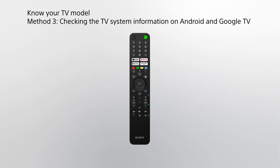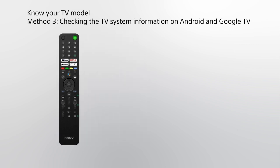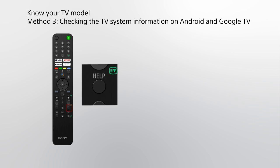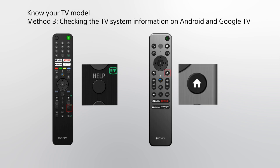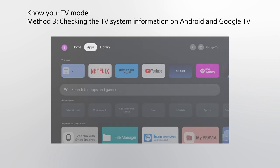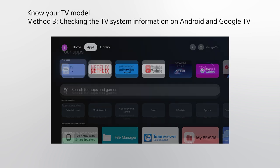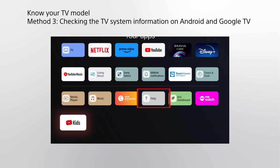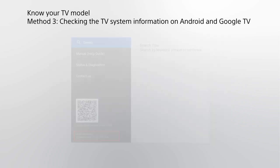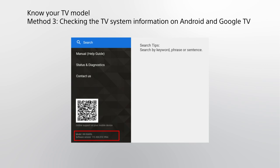Method 3: Checking the TV system information on Android and Google TV. On the remote control, press the Help button. For newer TV models which do not have the Help button on the remote control, press the Home icon instead. Go to Apps at the top, scroll right to select See All, then select Help. The model name is displayed at the bottom left of the screen.